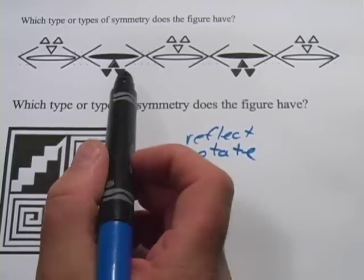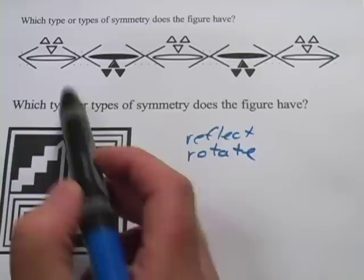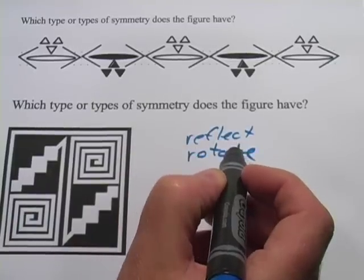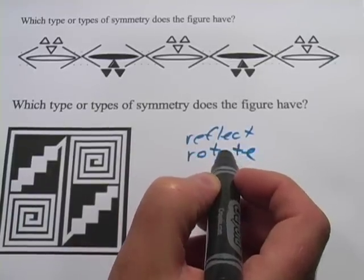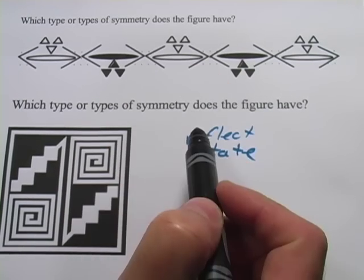Let's take a look at this first one. It says which type or types of symmetry does the figure have? And if you want to see whether it has reflection symmetry, what you'd want to do is see if there's a line you could draw somewhere where you get a mirror image on the other side.